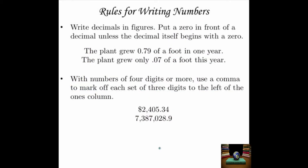Decimals: write decimals in figures — in numerals. Put a zero in front of a decimal unless the decimal itself begins with a zero. So "the plant grew 0.79 of a foot in one year," but "the plant grew only .07 of a foot this year" — since this decimal already starts with a zero, we don't add one in front. And of course we use numerals for decimals, because otherwise spelling out thousandths gets really complicated.